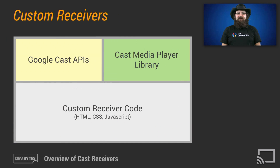Custom receiver applications are the way to go if you want to have control over all aspects of the behavior of your application. With custom receivers, you can support protocol namespaces beyond just media and build rich experiences for your users. You have full control over the presentation, interactions, and more. Using the Google CAST receiver SDK, you can build an HTML5 application, hook into the various events fired within the CAST receiver message system, and build complex behaviors beyond simple media playback.